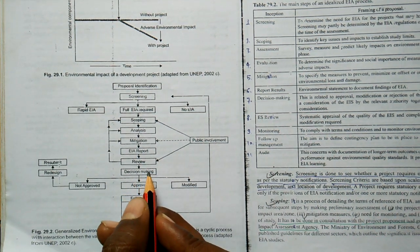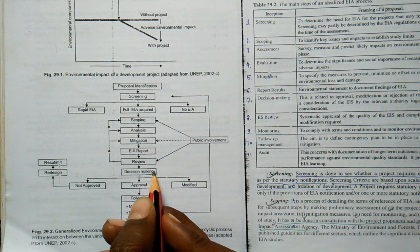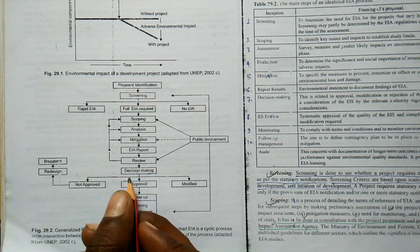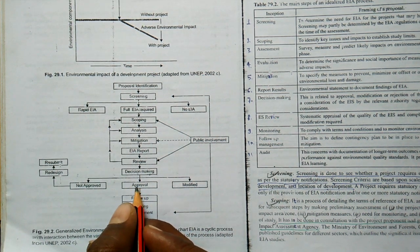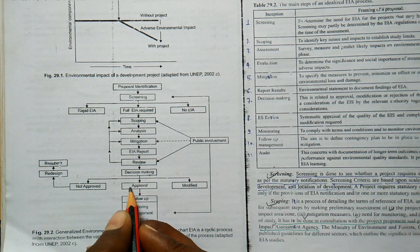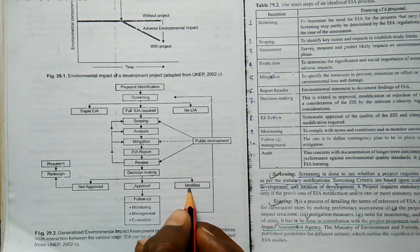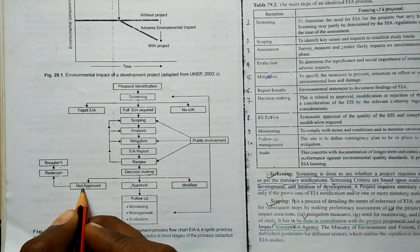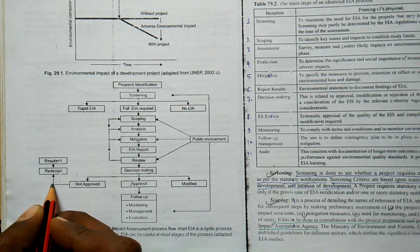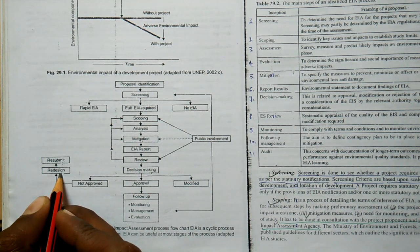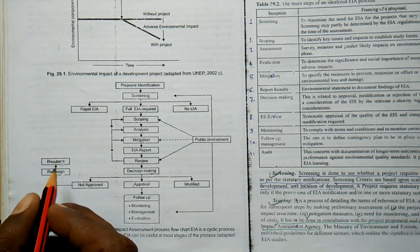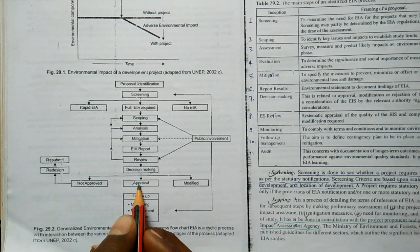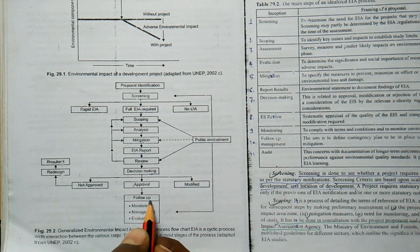In 2001 EIA notification, after decision making, there is a step in which a decision is taken whether the project will be approved, or modified, or not approved. If the project is not approved, redesign and resubmit is preferred. If the project is approved, the follow-up step comes.